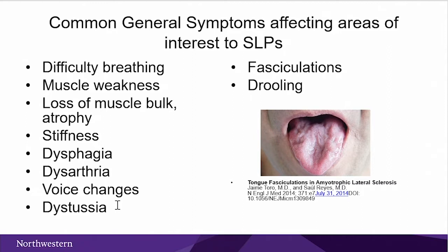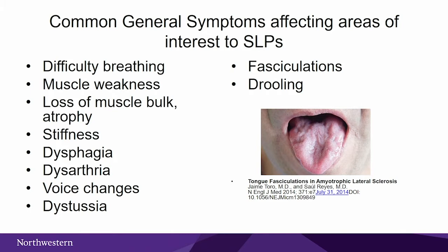Some of the things that affect communication and speech clarity in ALS: we have difficulty breathing, and since respiration is a primary subsystem of speech, this affects intelligibility. We also see muscle weakness, loss of muscle bulk, and atrophy in oropharyngeal musculature, as well as stiffness. This can be complicated by dysphagia, dysarthria or slurred speech, imprecise speech, vocal changes, problems with coughing and cough strength, fasciculations, and drooling.